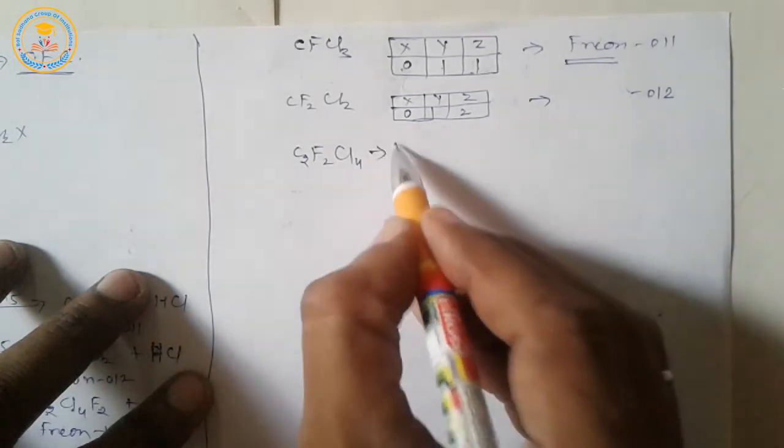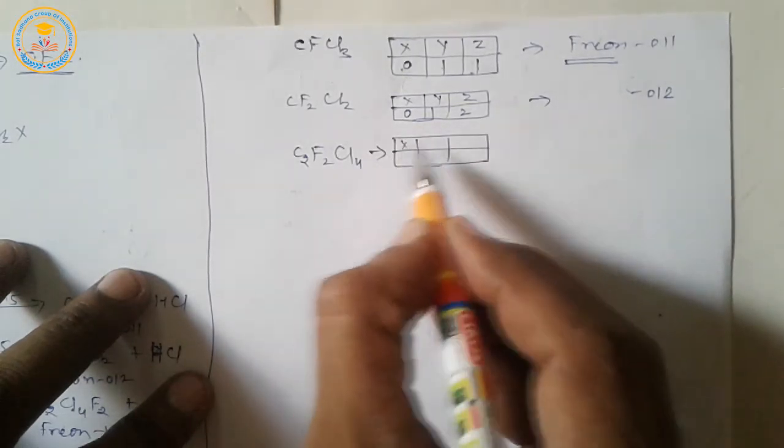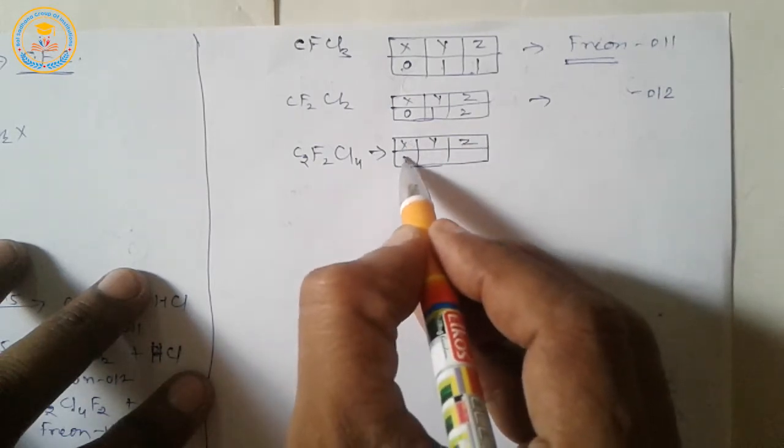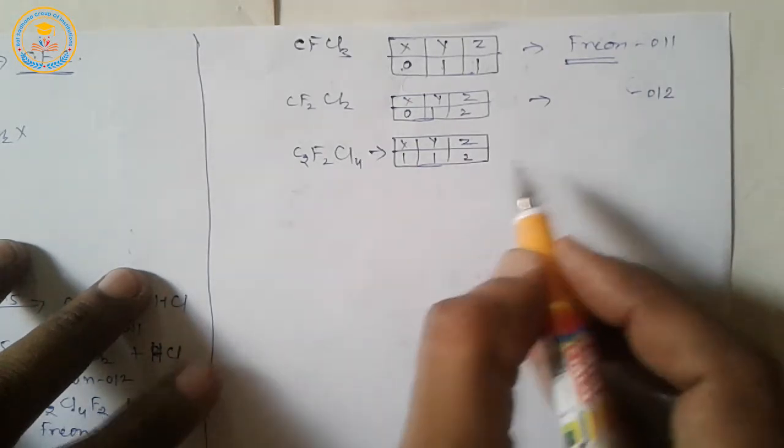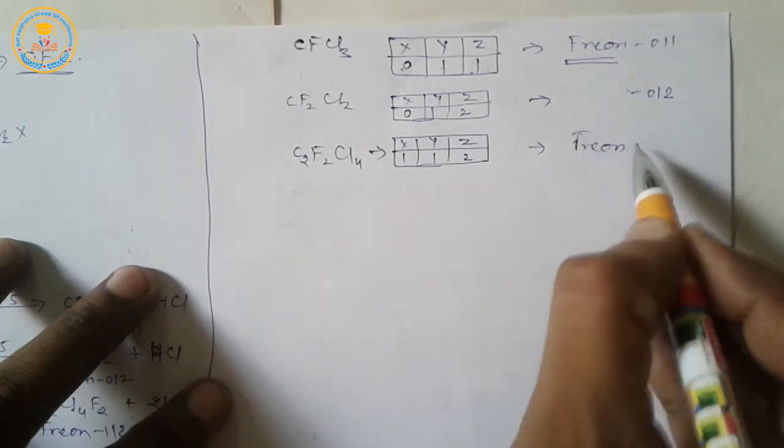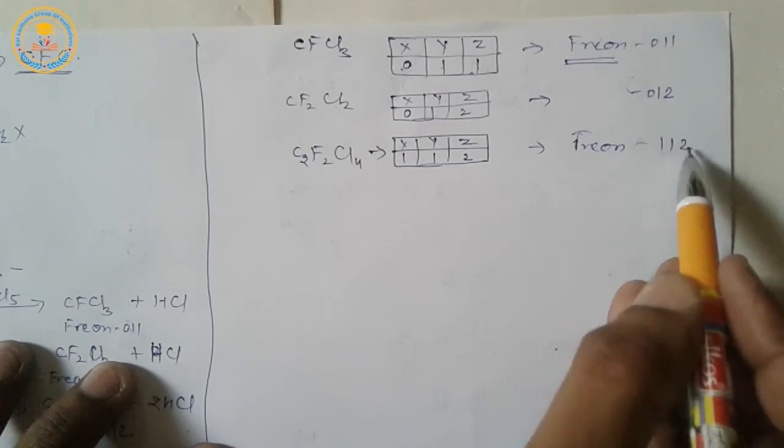Next, we take third example: C2F2Cl4. For this molecule, values of X, Y, Z are 1, 1, 2. Then, its nomenclature is Freon 112.